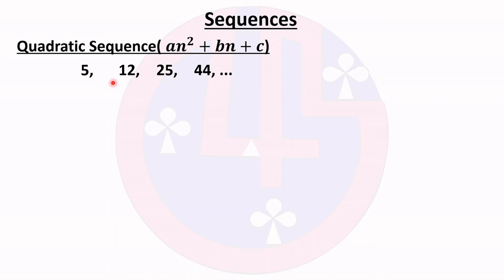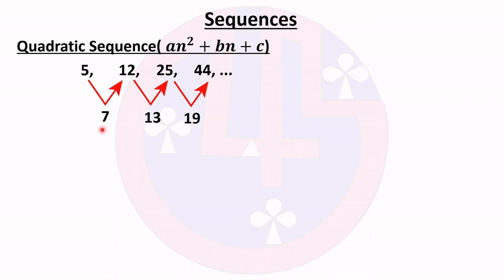First, we find the first differences: second term minus first term gives 7, third term minus second term gives 13, then 19. Now you can check these differences are not the same, so again we find the second differences: 13 minus 7 gives 6, and 19 minus 13 gives 6.